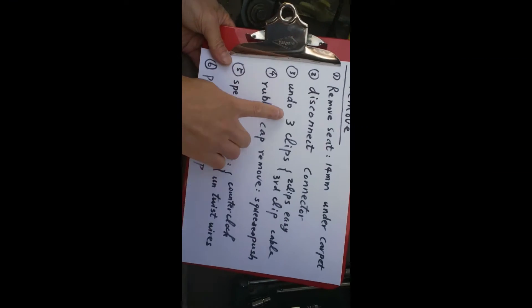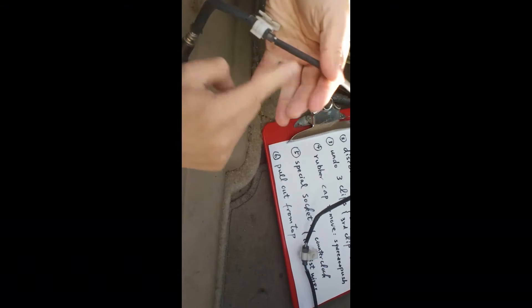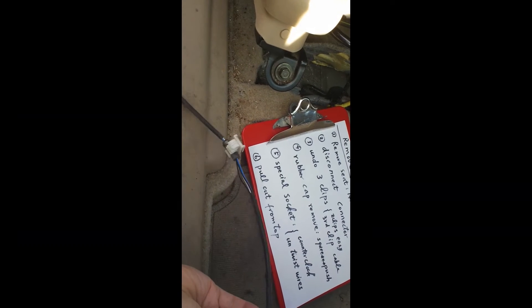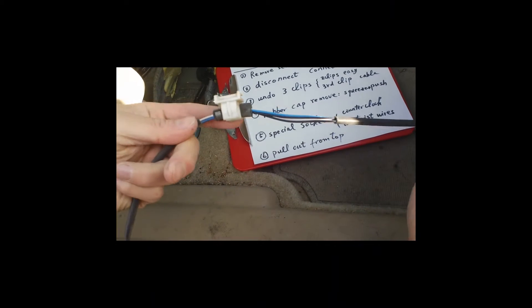The third step is undo three clips. See, look at this. There are three clips. One, two, three. So it's pretty hard to see from under. I will demonstrate on this. So the first two clips is pretty easy. You just pry this and very easy. The first two will come off.